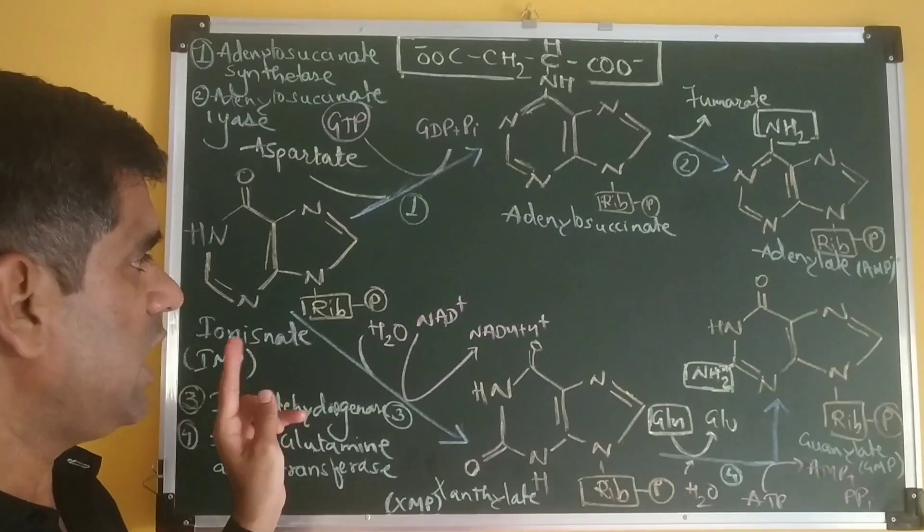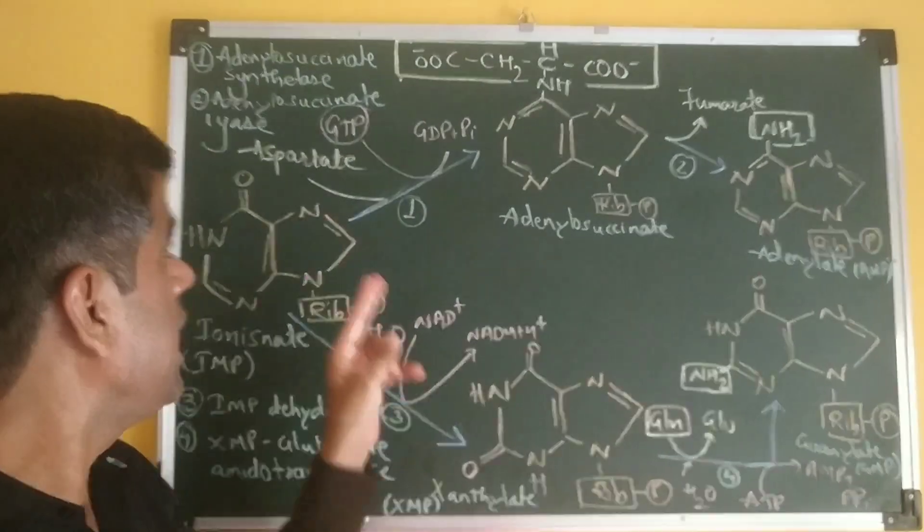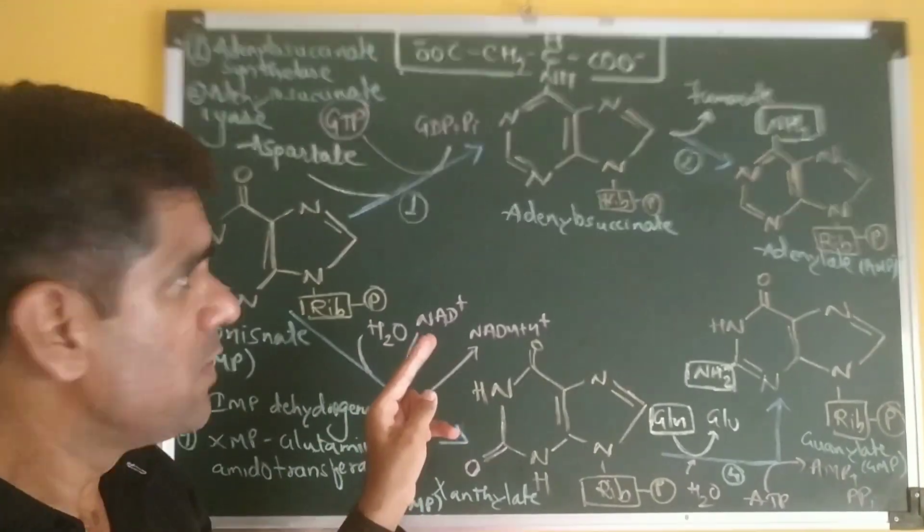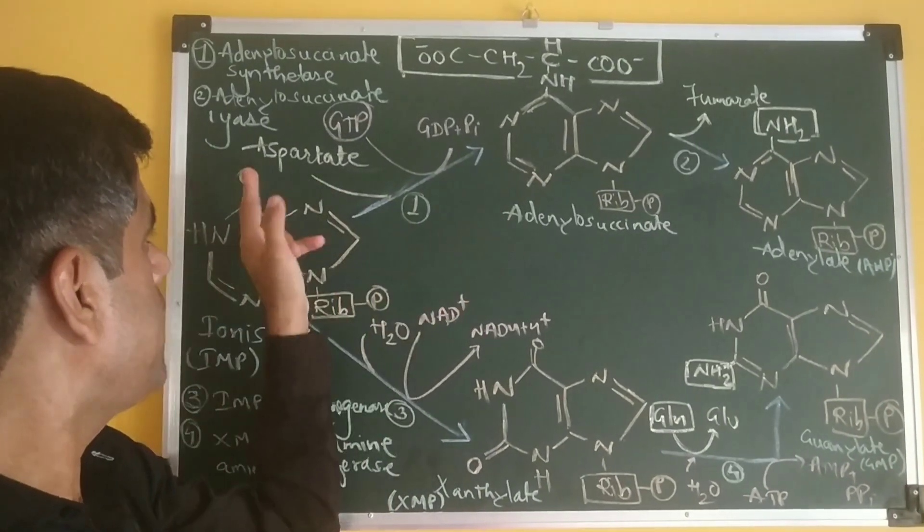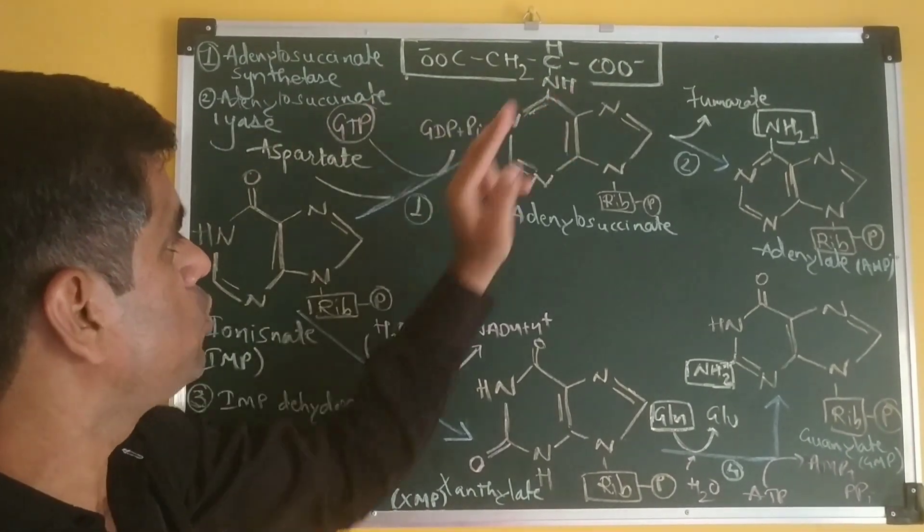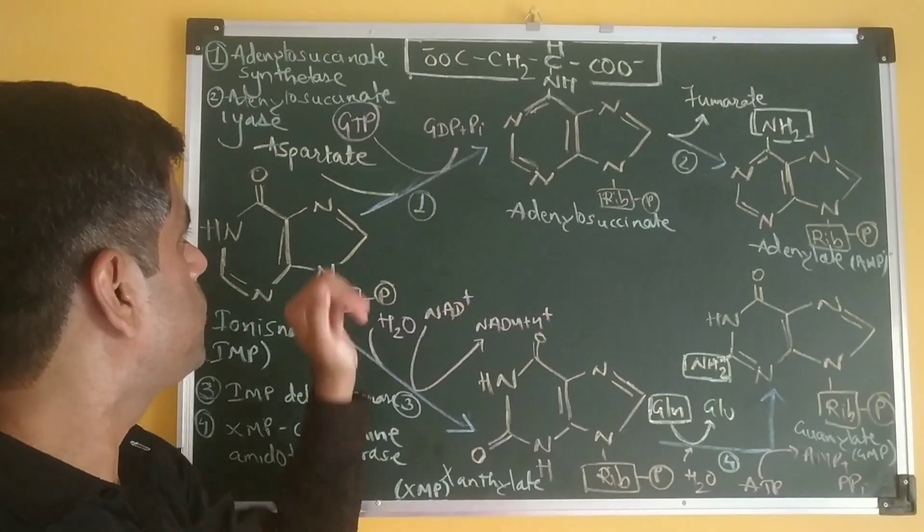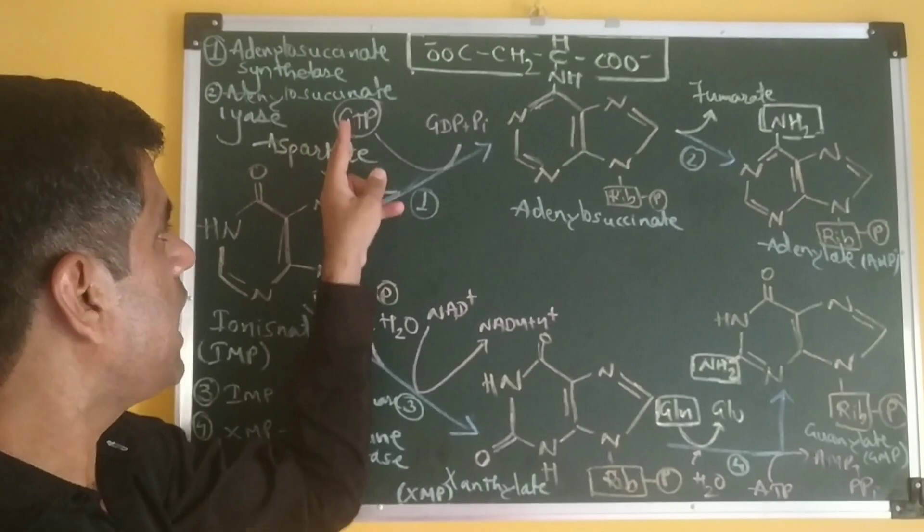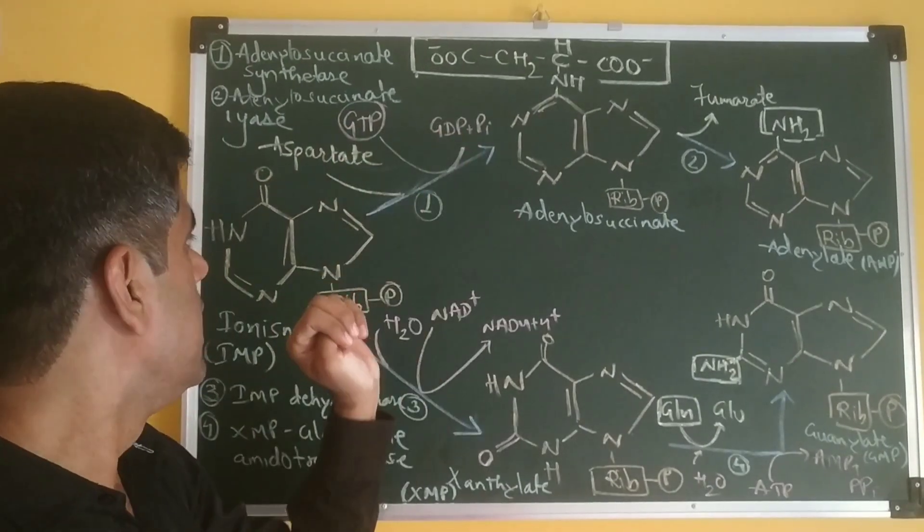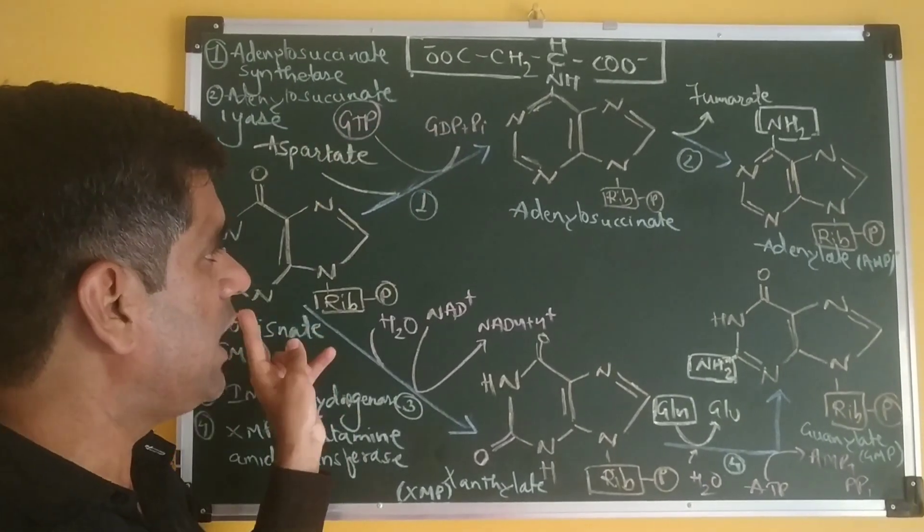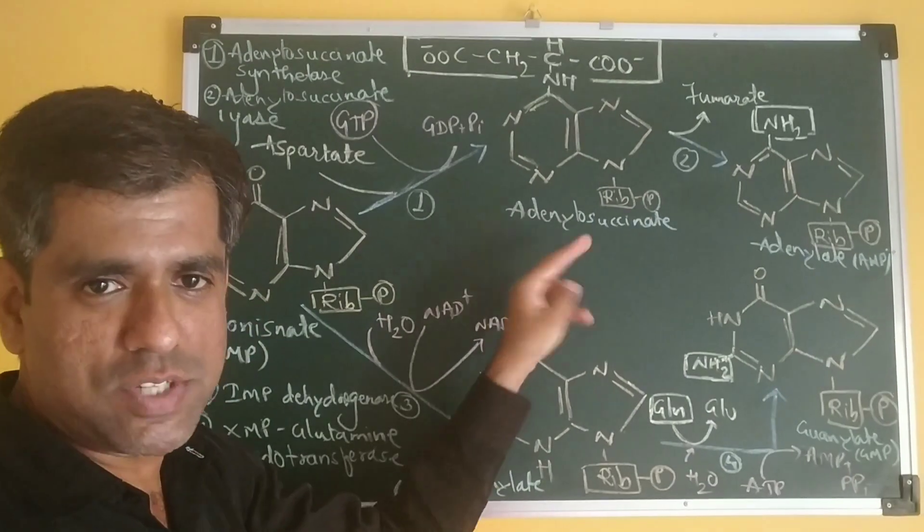In the first step, inosinate is acted upon by adenylosuccinate synthetase, which transfers the amino group from aspartate. Aspartate as a whole is attached to inosinate to form adenylosuccinate. The energy required is provided by GTP, which is hydrolyzed to form GDP and Pi. After attachment of aspartate, inosinate is converted to adenylosuccinate.